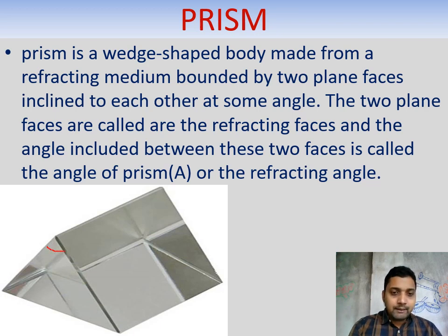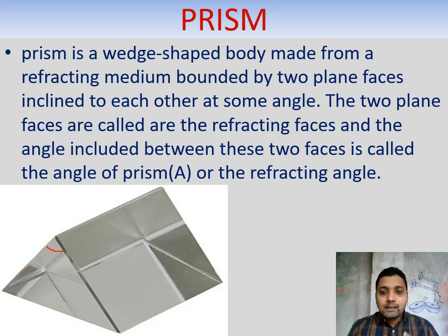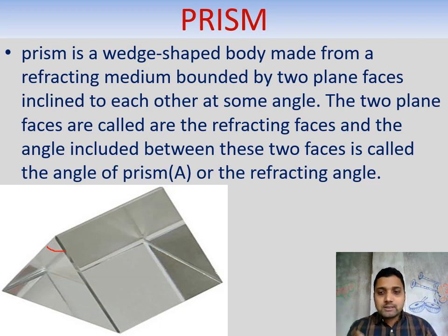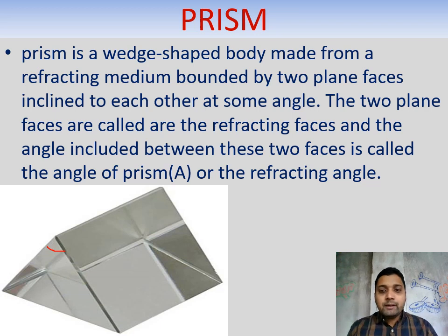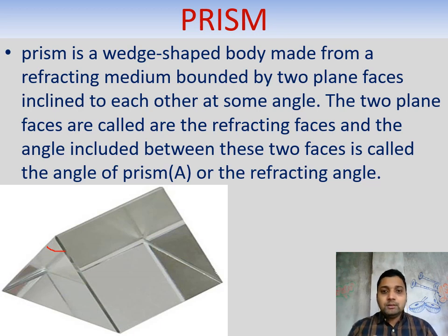This angle is called the angle of the prism or refracting angle, and depending upon this angle, the name of the prism is different. As we know, triangles are of different types — equilateral, right-angle, isosceles, scalene — so accordingly prisms also have different names: right-angle prism, equilateral prism, and so on, depending upon the shape of the triangular face.